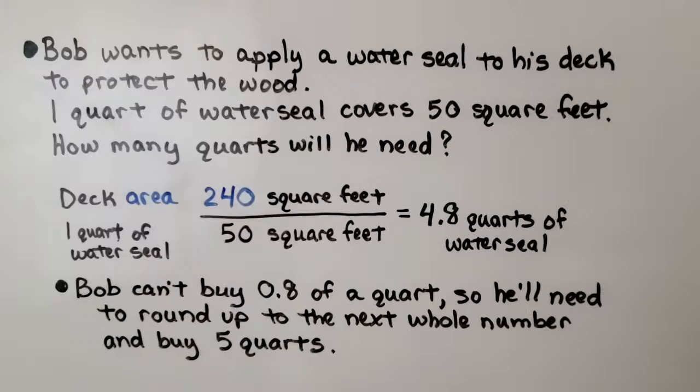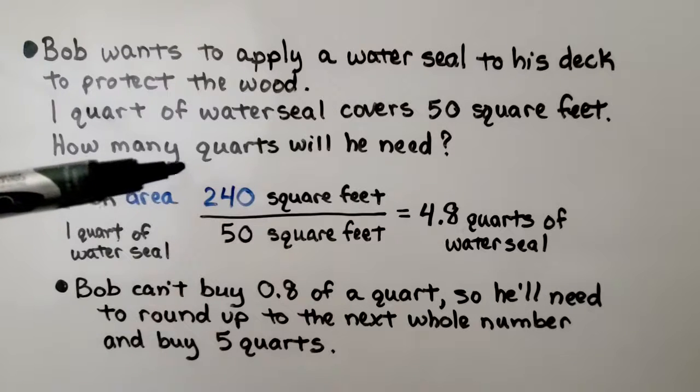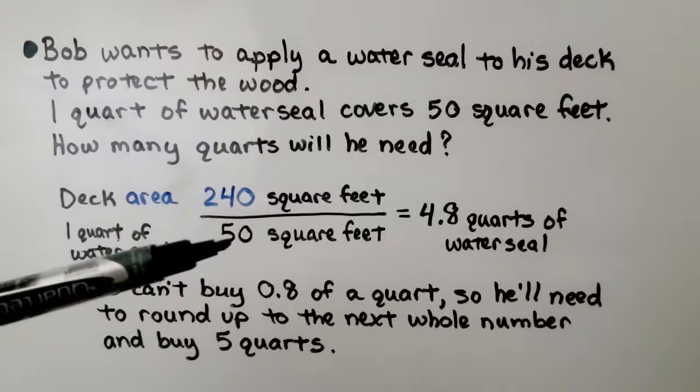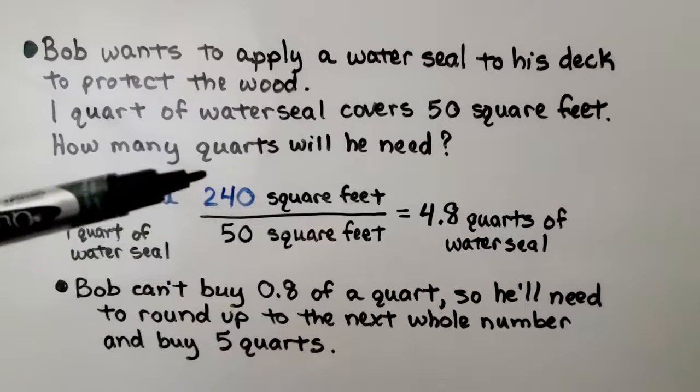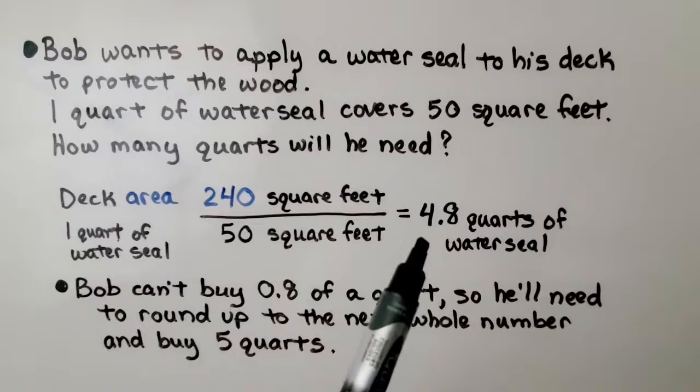Bob wants to apply a water seal to his deck to protect the wood. One quart of water seal covers 50 square feet. So, how many quarts will he need? Well, the deck area is 240 square feet. One quart of water seal covers 50 square feet. We can divide 240 by 50. We're going to get 4.8 quarts of water seal.